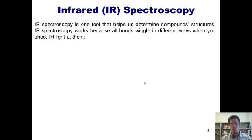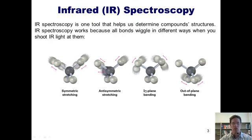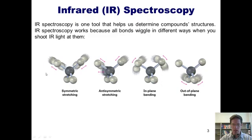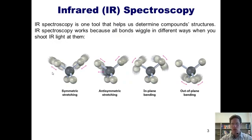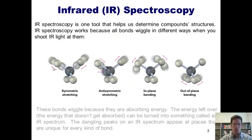IR spectroscopy is one tool that helps us determine compound structures. It works because all bonds wiggle in different ways when you shoot IR light at them. If I take molecules and fire energy in the form of infrared light at them, they begin to move. As these bonds wiggle, they absorb energy from the light. The infrared energy that's left over — the energy that doesn't get absorbed — passes through the molecule and is detected and converted into something called an IR spectrum.